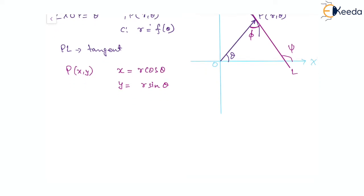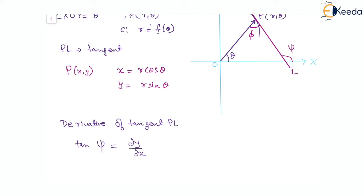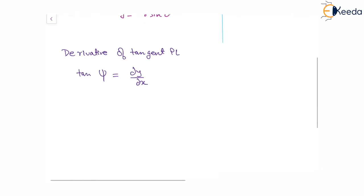The slope of the tangent is tan(ψ), which is what it makes with the x-axis, and that equals dy/dx. Since both x and y are functions of θ, and R is also a function of θ for the polar curve, we can write tan(ψ) equal to (dy/dθ) divided by (dx/dθ).